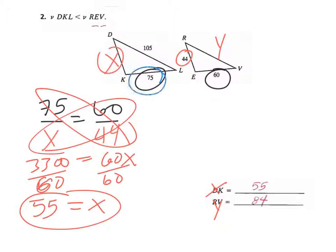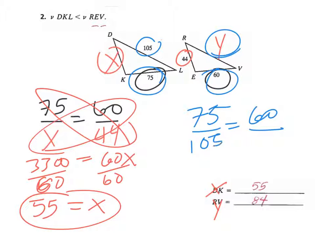Now set up the other one. So again we know the 75 is like the 60, 75 is like the 60, and the 105 is like the Y. 105 is like the Y. Cross product fun, 105 times 60 is 6300 equals 75Y. Divide off that 75 and Y is 84.